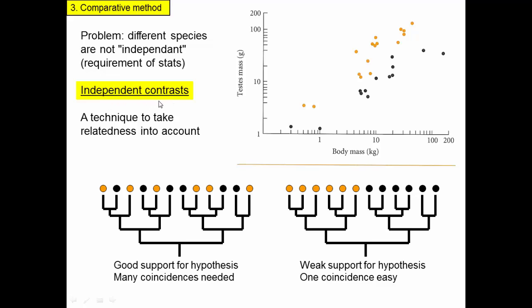Independent contrasts is a technique that takes relatedness into account. We're not going to do the details here — your book has a nice illustration — but conceptually it works like this. If when you looked at your phylogenetic tree, the polygamous and monogamous species were mixed all throughout the tree, then a difference between two close relatives — one polygamous, one monogamous — means the difference in testes size is not just inherited from their ancestor. It's because there's been a change in the mating system and testes size that also occurred independently multiple times across the tree.